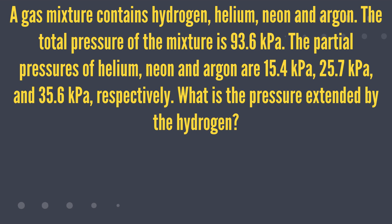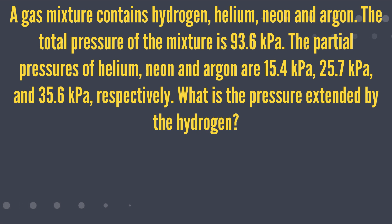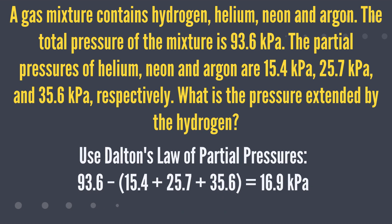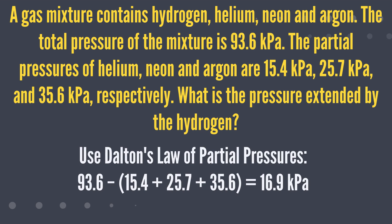What is the pressure exerted by hydrogen? We know that the total pressure is equal to 93.6 kilopascals, and we have the pressures of the other three gases in the mixture. We also know that all the units are the same and we don't have to do any mole conversions. So all we need to do is add up the three individual pressures and subtract them from the total to get the pressure of hydrogen, which is 16.9 kilopascals. This question uses Dalton's law of partial pressures perfectly.